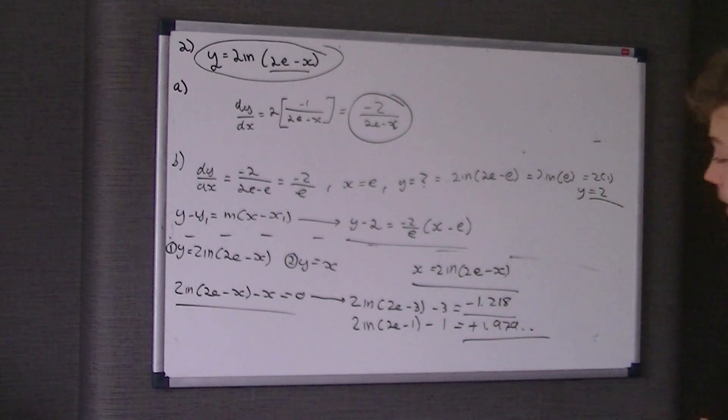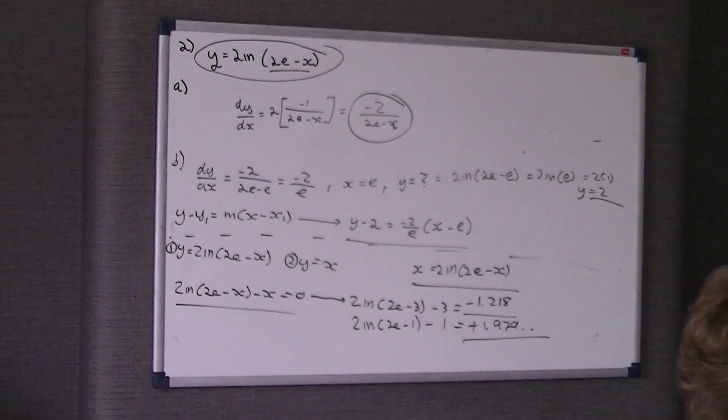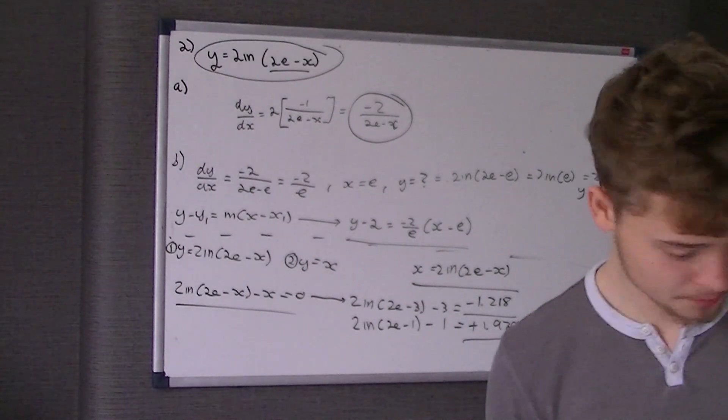Do the same for 1. So if we sub in 1, 2 ln of 2e take 1 take 1 is equal to positive 1.979 and it goes on. Then you just write a little paragraph underneath saying there's been a change of sign, therefore it lies between these two values. That's pretty much what they've done in the mark scheme.